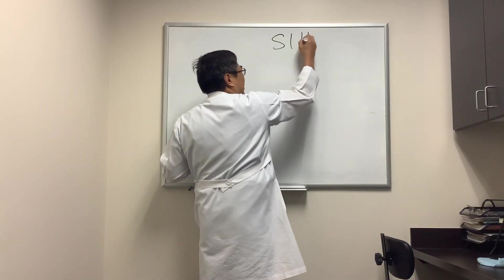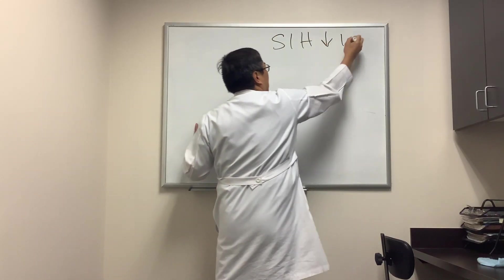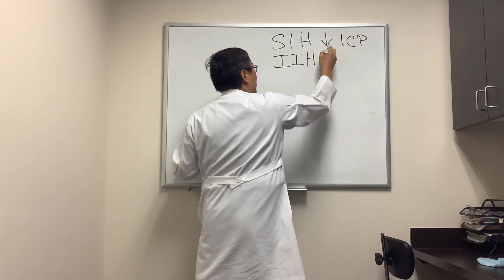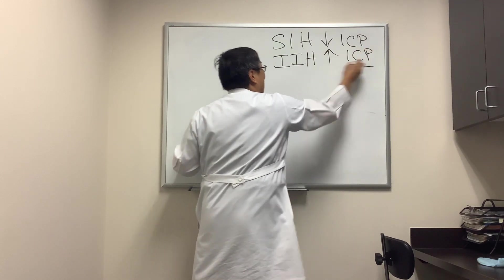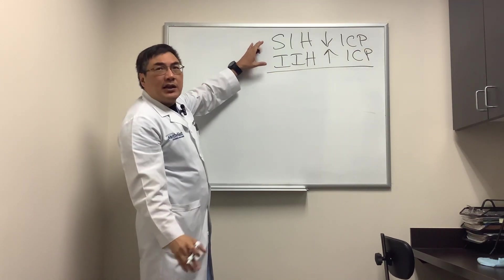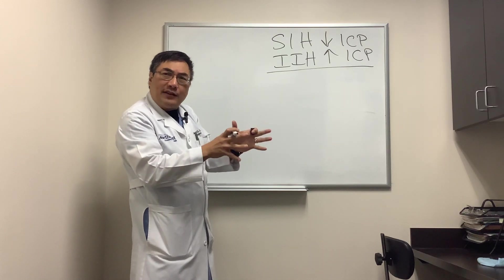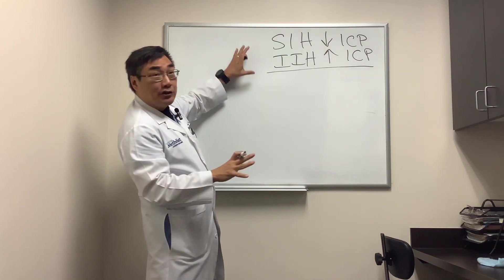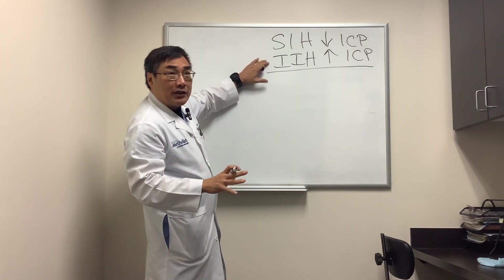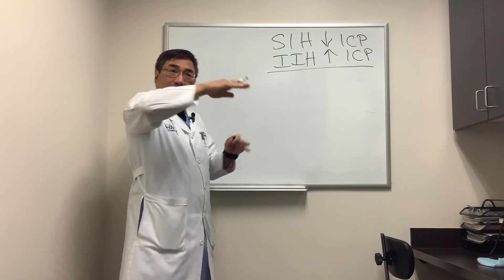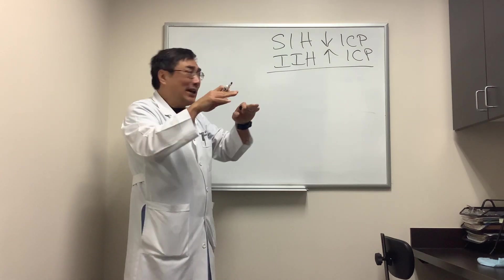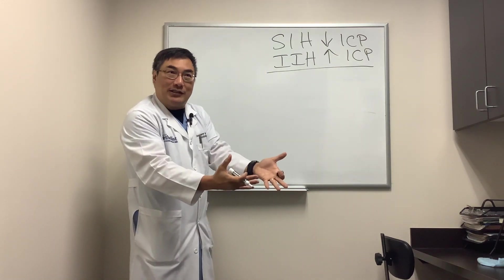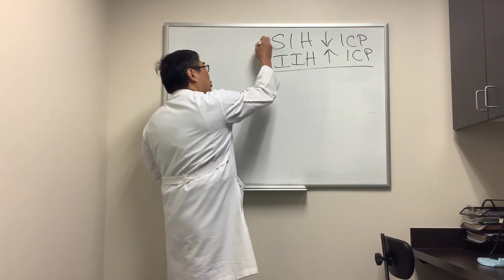Today we're talking about spontaneous intracranial hypotension, where the intracranial pressure is low, versus idiopathic intracranial hypertension, where the intracranial pressure is high. You would think it'd be obvious which one it is, but because it's a pressure-related phenomenon, the symptoms and sometimes the signs overlap between these two conditions. High pressure can erode through the skull base, like at the cribriform plate, leading to CSF leak and CSF rhinorrhea that can produce intracranial hypotension as a result. So the two disorders are connected.